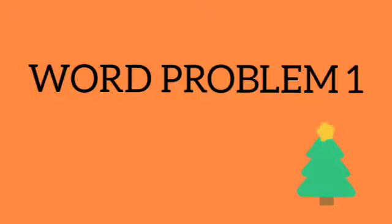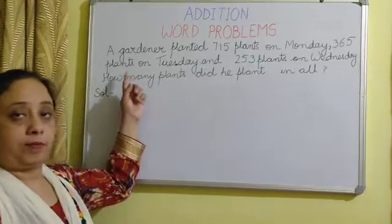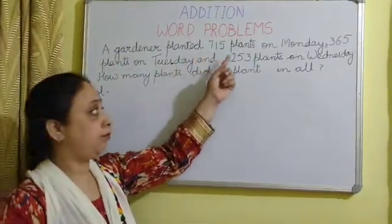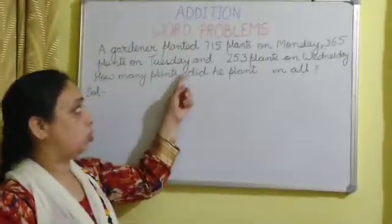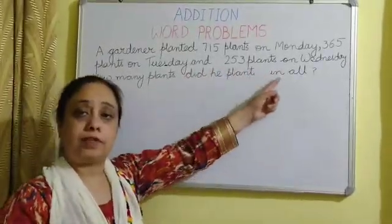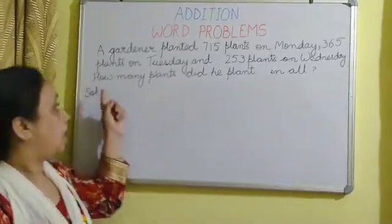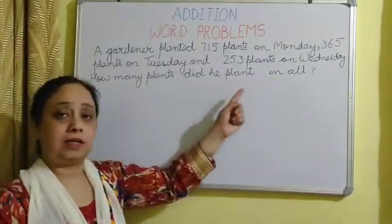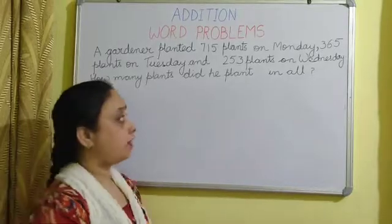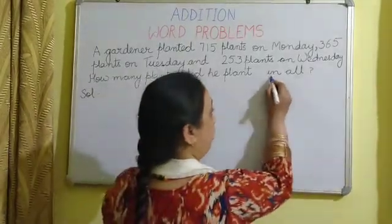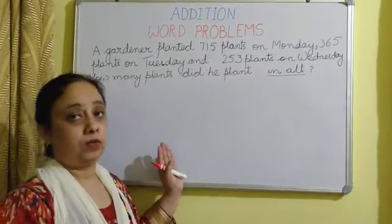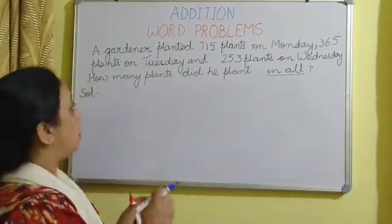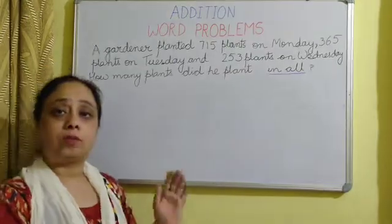The first word problem says: A gardener planted 715 plants on Monday, 365 plants on Tuesday, and 253 plants on Wednesday. How many plants did he plant in all? We have the words 'in all' here, which shows that we have to add. Now I will tell you how to form the statements.